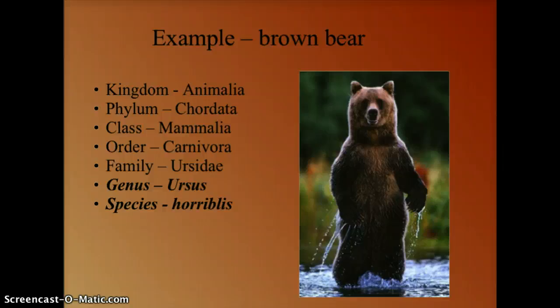Let's look at the California brown bear. Its kingdom is Animalia. Because it has a spinal column, its phylum is Chordata. It has hair, cares for its young, and females have mammary glands, making it Mammalia — its class. It eats meat primarily, though bears are omnivores. Its family is Ursidae, genus Ursus, and species horribilis.